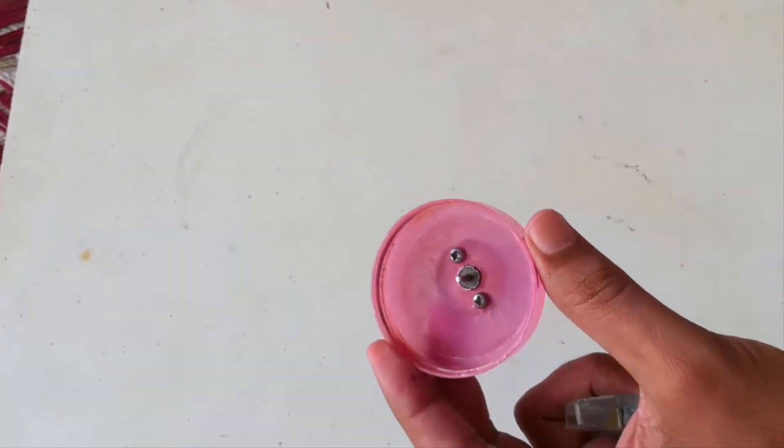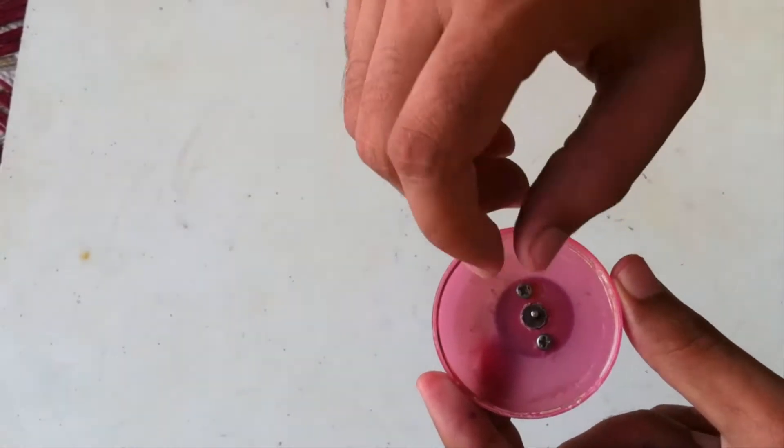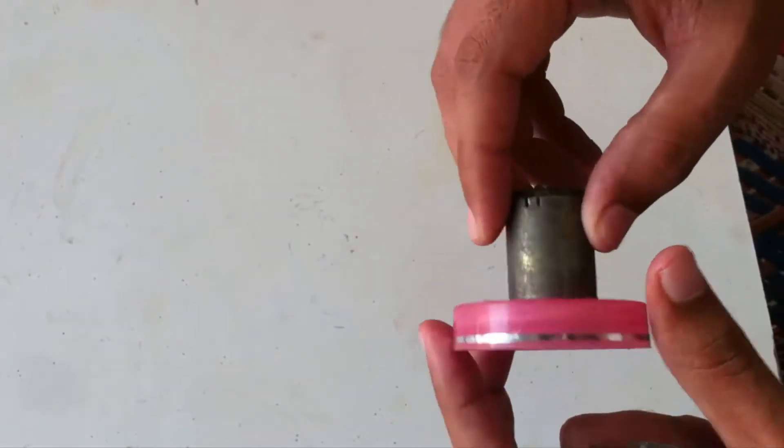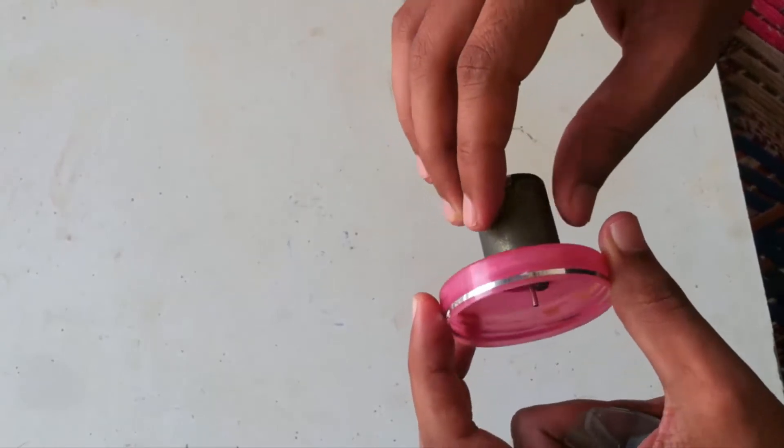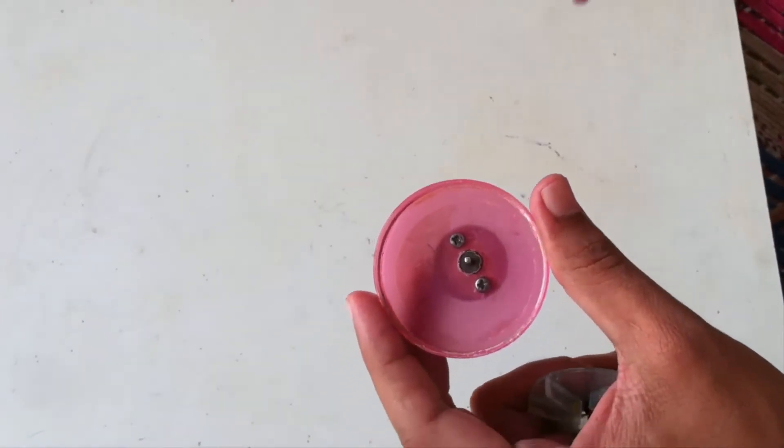So we have tightened the motor something like this using screws. This motor is tight enough so there will be no leakage of water.